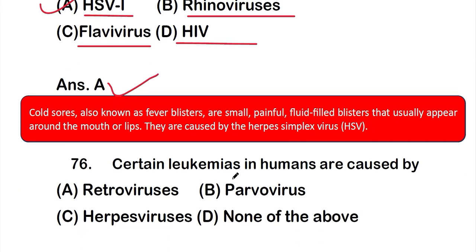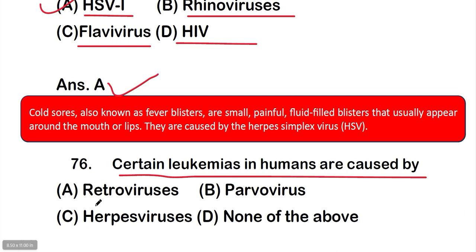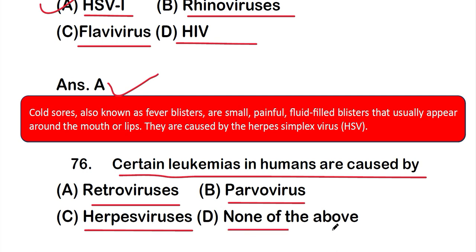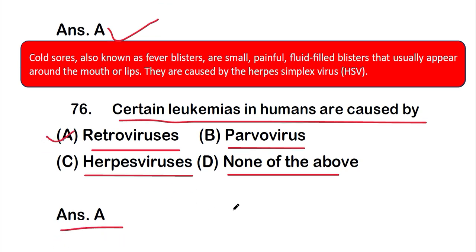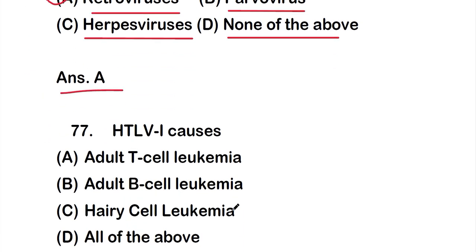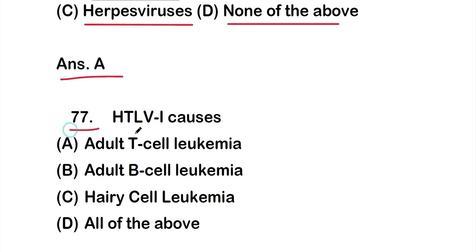Question number 76: Certain leukemias in humans are caused by — option A: retroviruses, option B: parvoviruses, option C: herpesviruses, or option D: none of the above. The correct answer is option A — certain leukemias in humans are caused by retroviruses.